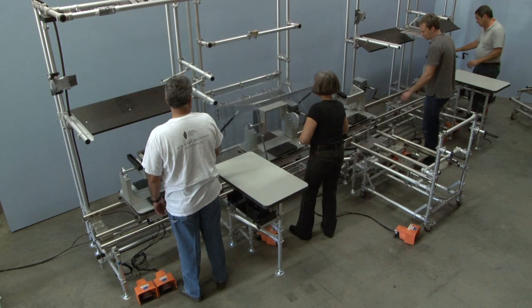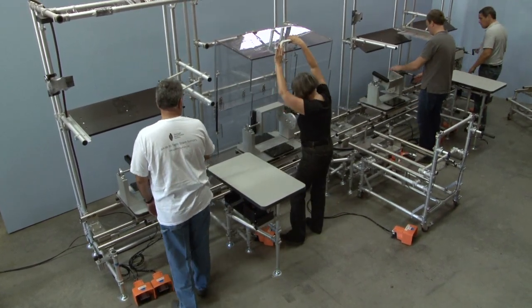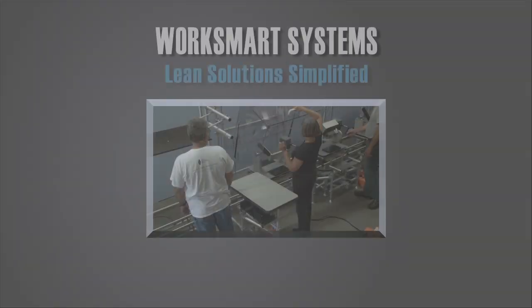The end result, a custom and ergonomic lean assembly and test cell that included many enhancements for improved efficiencies. How can WorkSmart Systems assist your team? Contact us at sales@WorkSmartSystems.com or 978-536-5000.